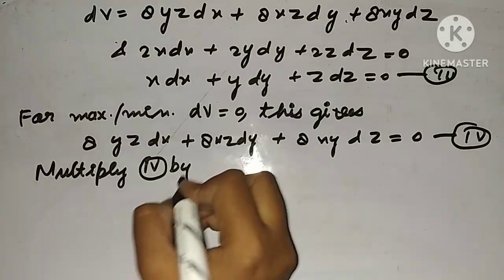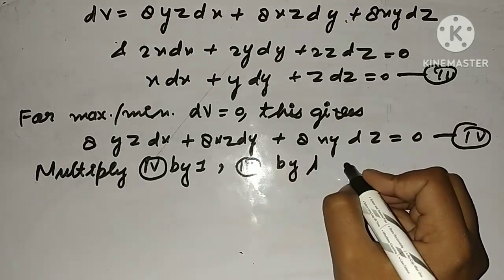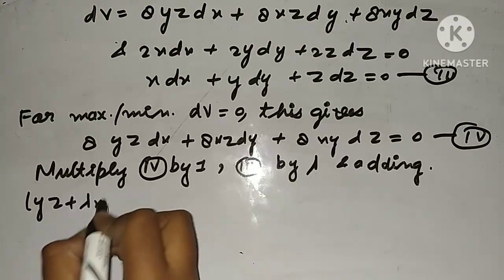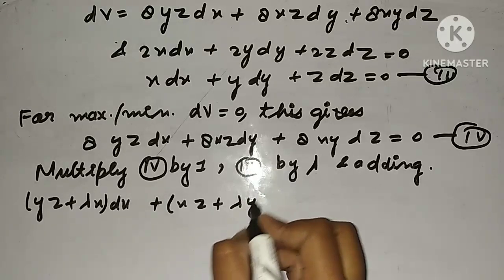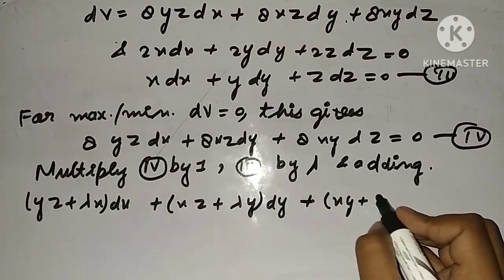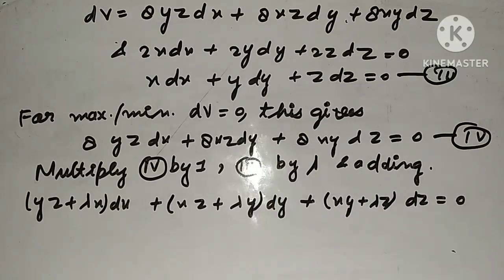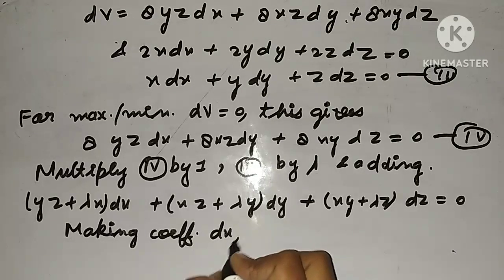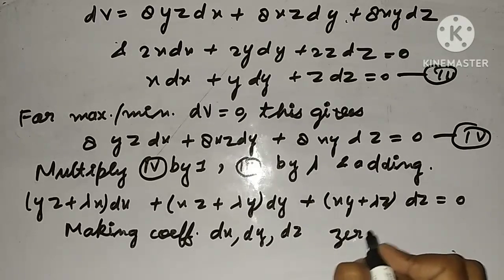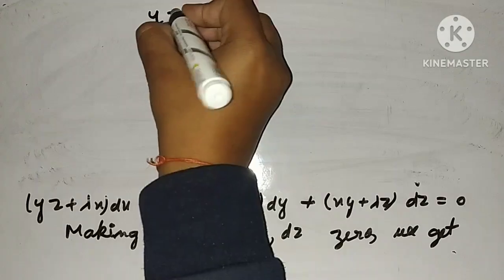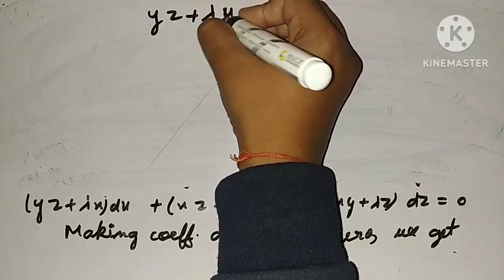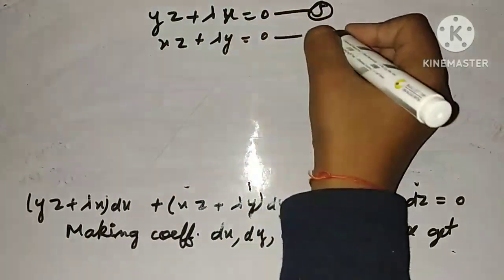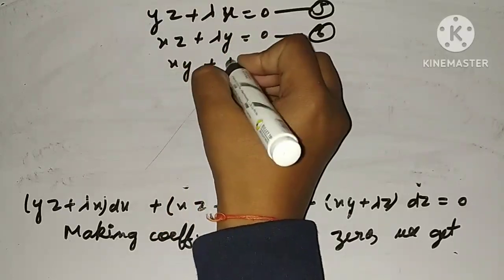Multiplying equation fourth by 1 and equation third by λ and adding: (yz + λx)dx + (xz + λy)dy + (xy + λz)dz = 0. Making coefficients of dx, dy, dz zero, we get: yz + λx = 0, xz + λy = 0, xy + λz = 0.